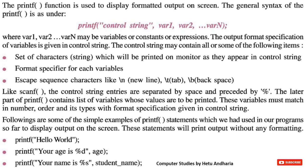The escape sequences include \n for a new line, \t for a tab, \b for backspace, and so on. Like scanf, the control string entries are preceded by the % sign. The later part of printf contains the list of variables. For example, to print 'hello world' you type it directly in double quotes. To display the value of integer variable age, you write %d and the variable name. You can also use %s to display a string stored in a character array like student_name.